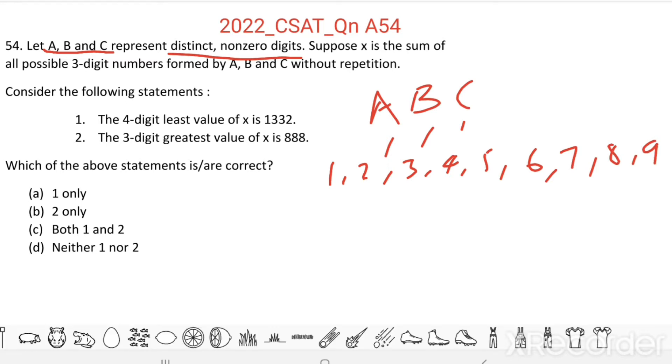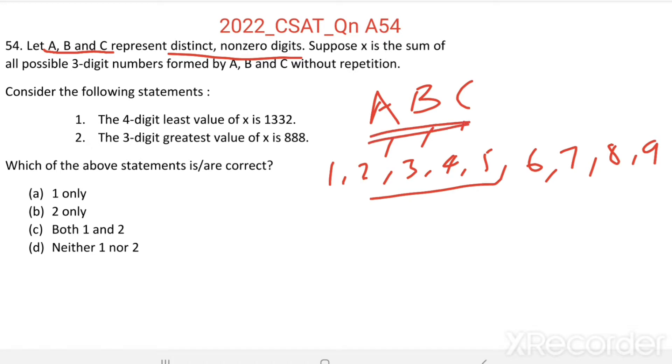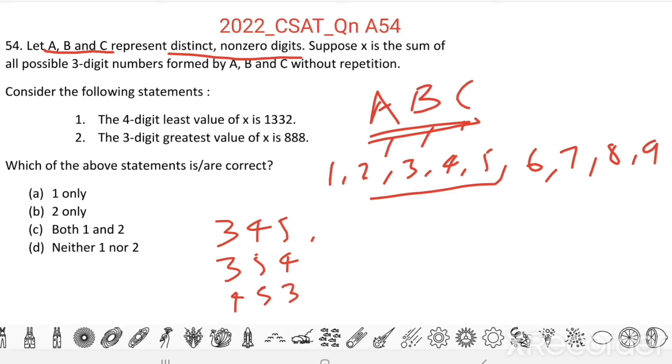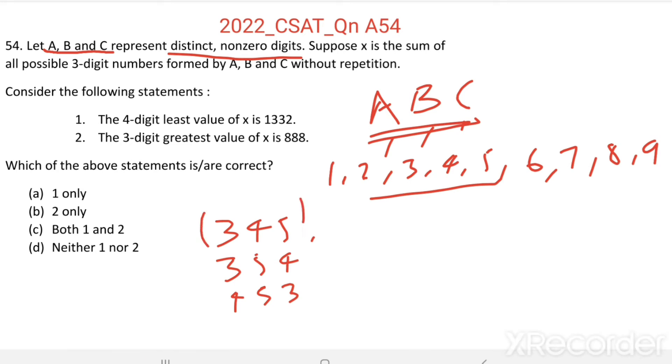Then, you can choose 3 numbers from this and form 3-digit numbers. Suppose I am choosing 3, 4, 5. Then I can form 3, 5, 4. Then, 4, 5, 3. Like this, I can make different numbers using these 3 digits.